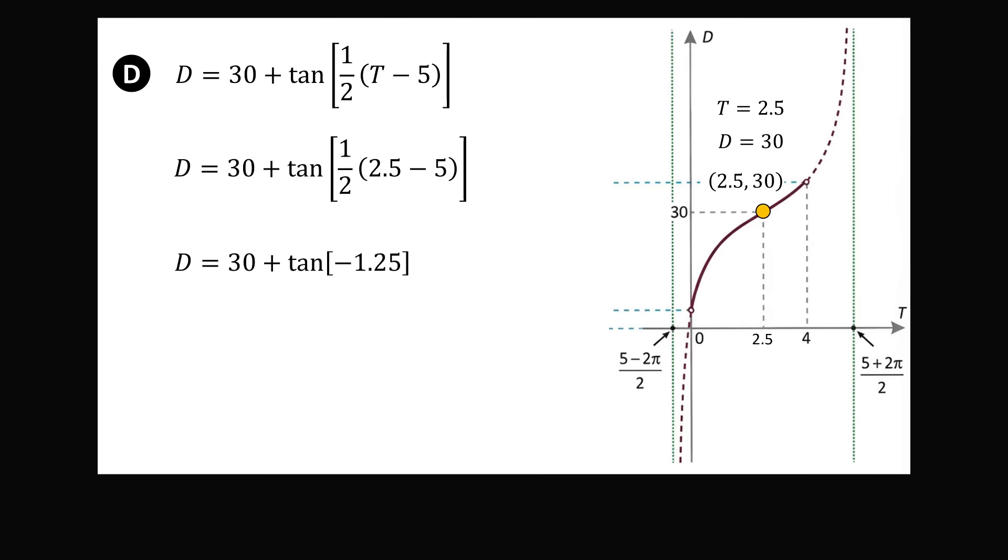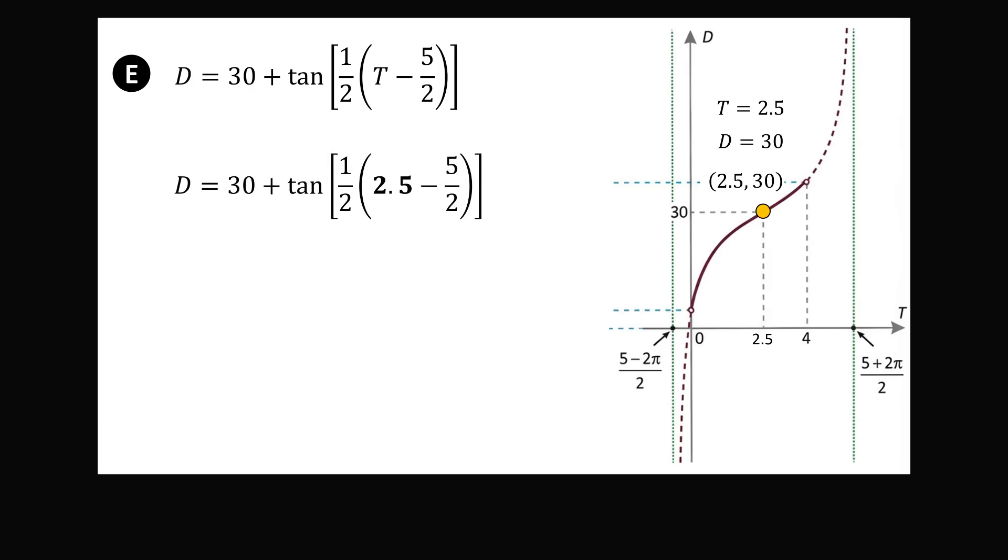When we go to option D, we substitute in and we end up with tangent of negative 1.25. This is going to be some irrational number. So, this is not going to simplify to be 30. So, D is not the correct answer. All we are left with is E and unless there's an error in the question that would be the correct answer but we substitute in 2.5 minus 5 over 2 is going to be 0. Tangent of 0 is 0. So, D is equal to 30 and 2.5 and 30 are on this graph. So, E is the correct answer. So, even if you didn't know anything about the horizontal and vertical translation you didn't need to know the distance between the asymptotes you could still solve this problem just by knowing that T is equal to 2.5 and D is equal to 30 is a point on the graph. So, E is the correct answer to this very exhaustingly and viral question that was posed in Brazil.